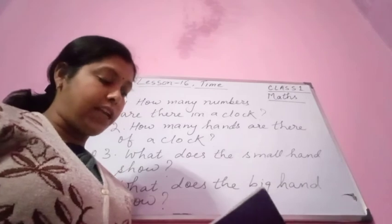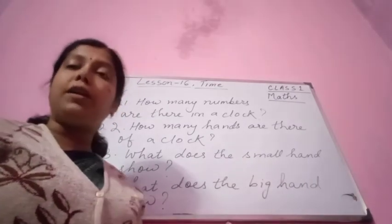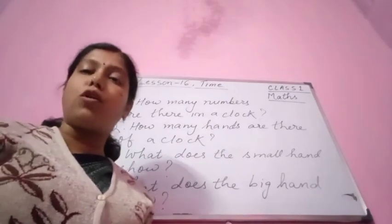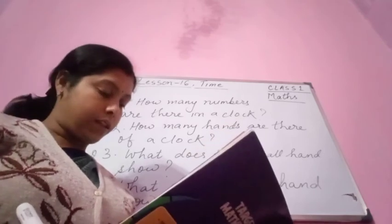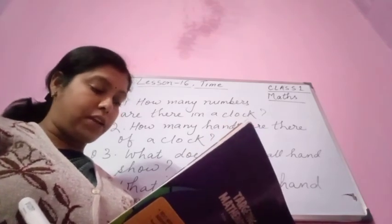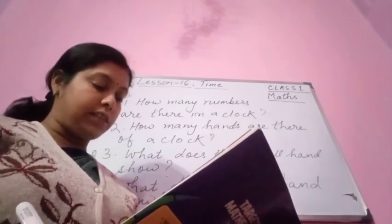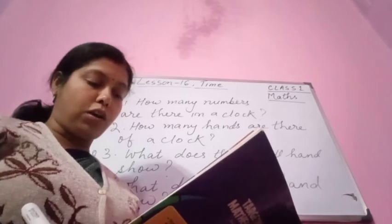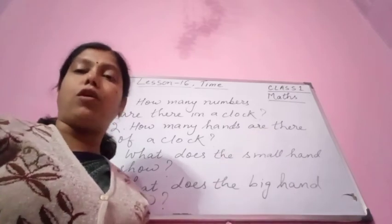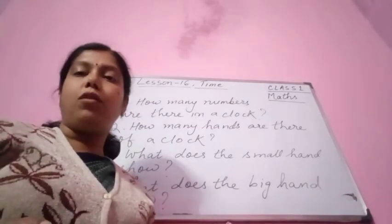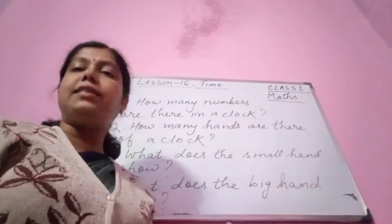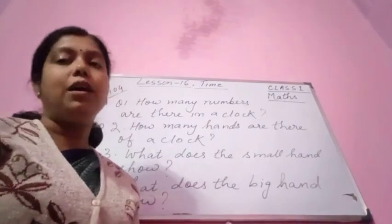Now see the picture. The first clock shows 3 o'clock — it is already written. The next one is 6 o'clock. Please do it in the book itself. Then the third one is 4 o'clock, the fourth is 7 o'clock, the fifth is 8 o'clock, the sixth is 10 o'clock, the seventh is 1 o'clock, and the eighth is 5 o'clock. See where the small hand is and where the big hand is — the big hand is on 12 — and you can easily say the time. In this way you read the clock.